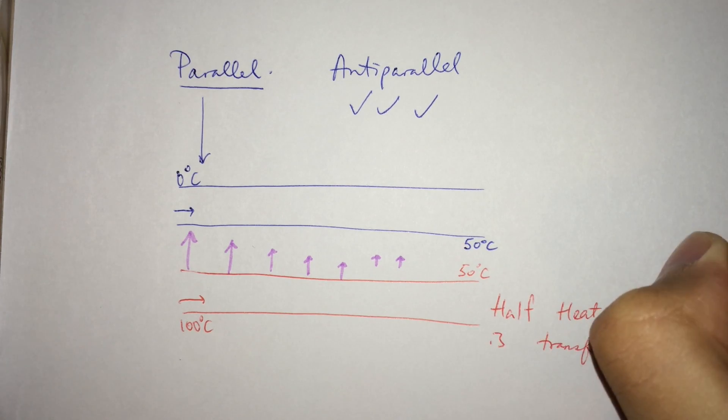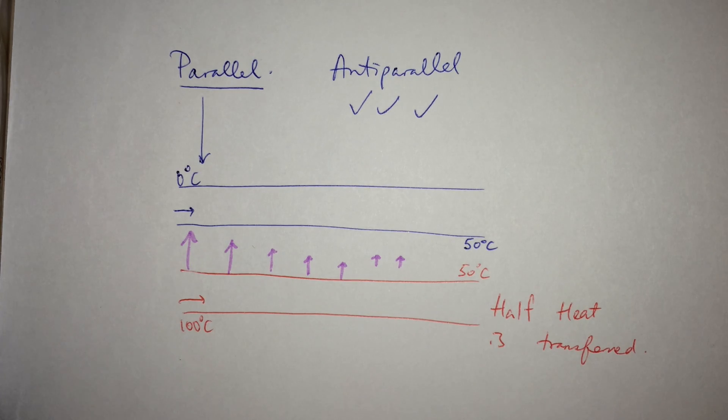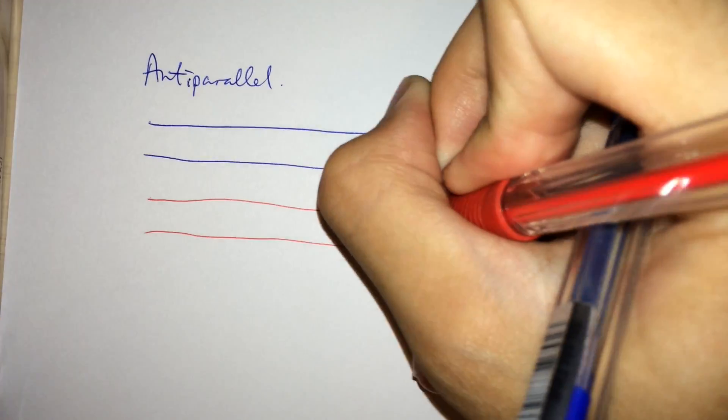However, if you have two streams of water running in anti-parallel, along the whole journey of the tubes, a heat gradient always exists to allow heat transfer, which if a long enough tube is provided, almost all heat energy could be transferred from one tube to another.